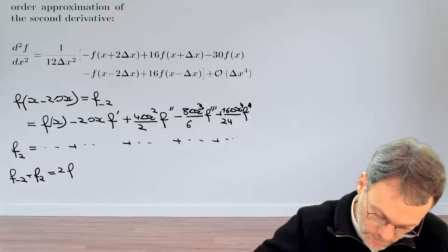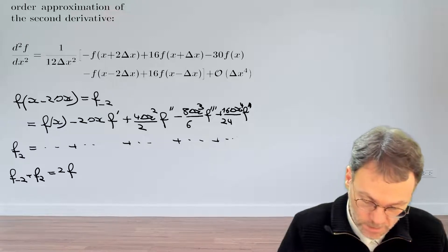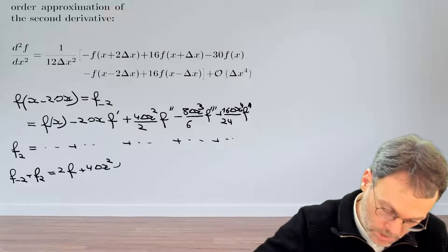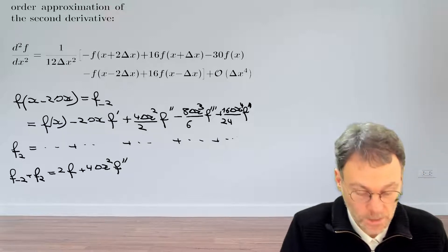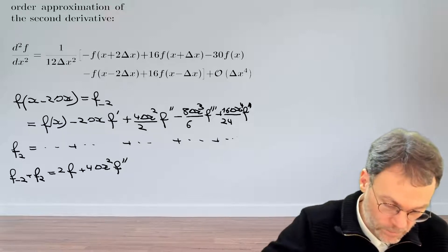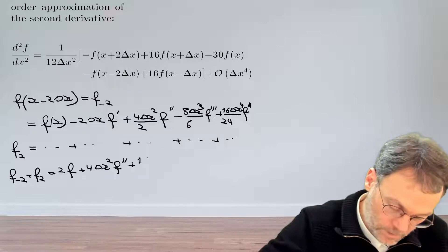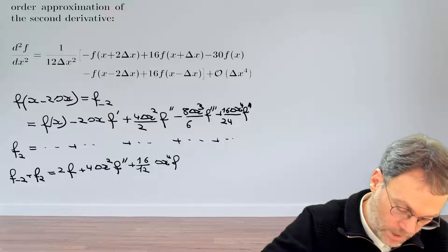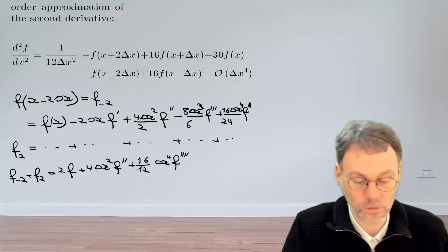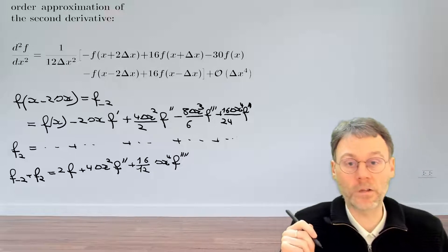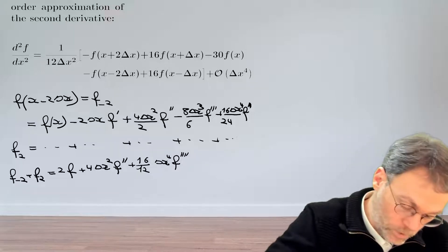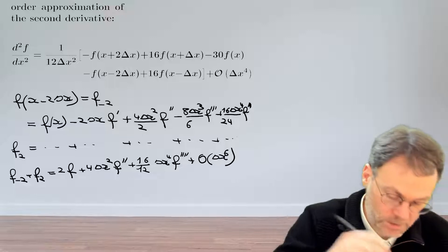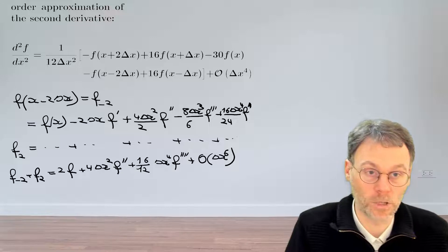Making that summation gives us 2 times f, and then the f prime term cancels as expected. Then we have 4Δx squared times f double prime. The third order term cancels, and for the fourth order derivative we have 16 divided by 12 times Δx to the power of 4, times the fourth order derivative. The fifth order derivative cancels, and the next remaining term is on the order of Δx to the power of 6.